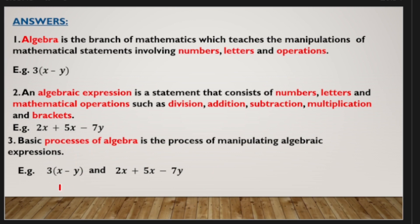For example, looking at 3(x minus y) and 2x plus 5x minus 7y — according to algebraic processes, we should know how to manipulate these to find the final answer. For instance, this expression is telling you to simplify it by multiplying 3 with what is inside the brackets. This is just a tip; let's dive deeper into the lesson.